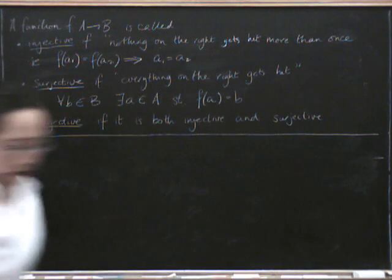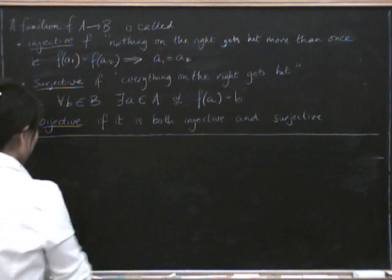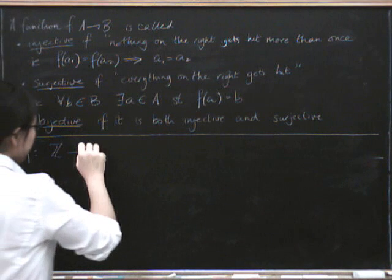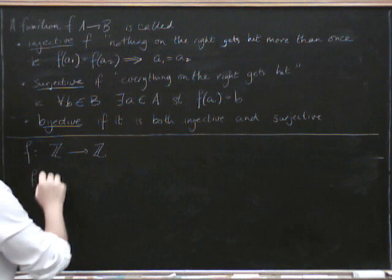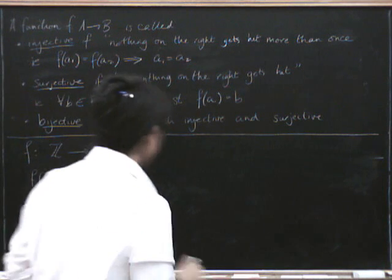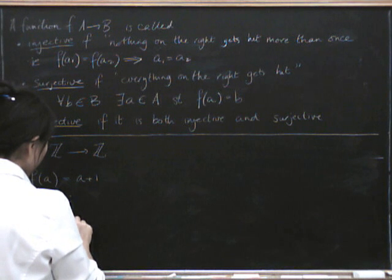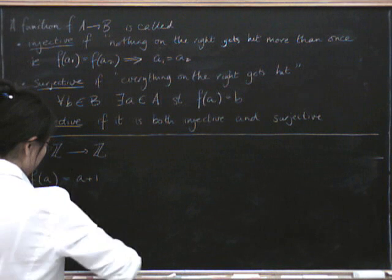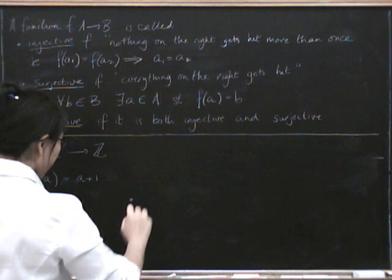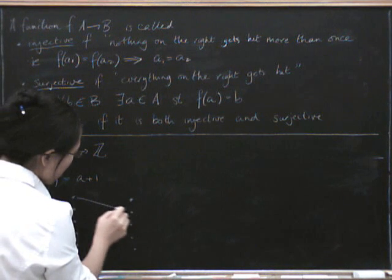Let's have a look at another example. Let's have a look at f going from the integers to the integers, where f of a equals a plus 1. So let's think about a little picture of this one. The integers we can picture as a whole load of dots in a row, and here we've got the same dots in a row and each one goes to the dot one down.